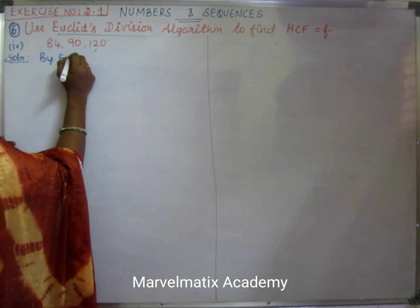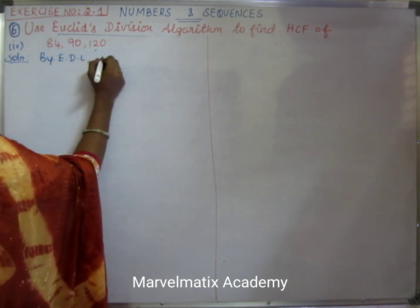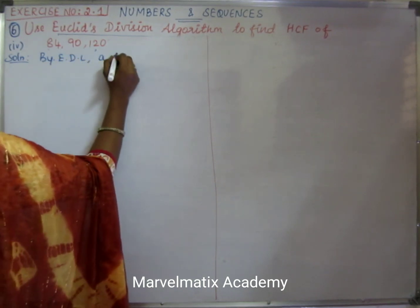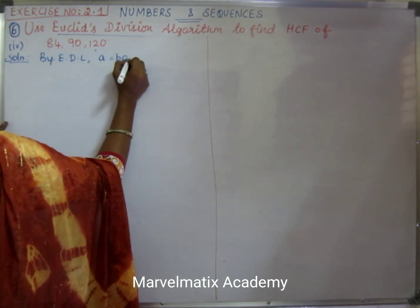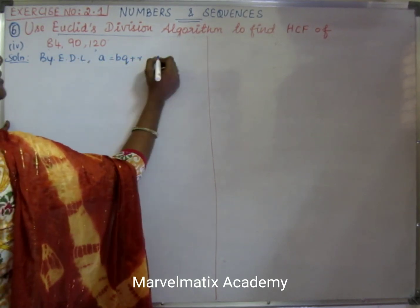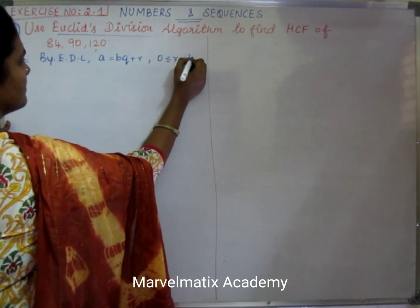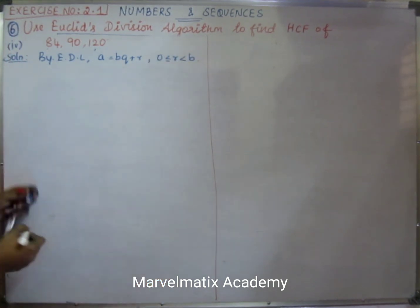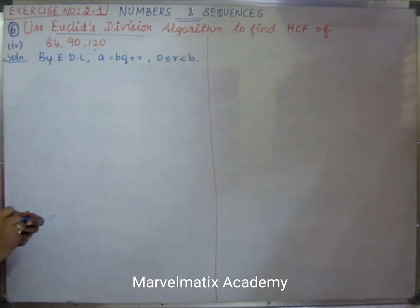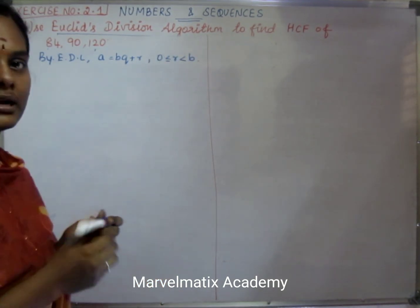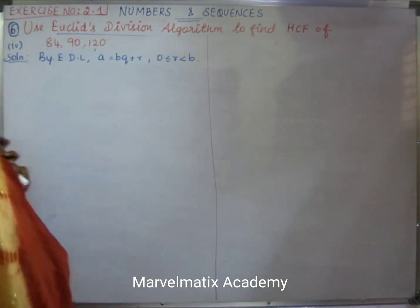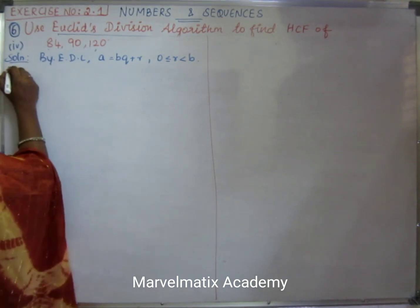This is the solution by Euclid's division lemma: a equals bq plus r, where 0 is less than or equal to r, which is less than b. Step 1.